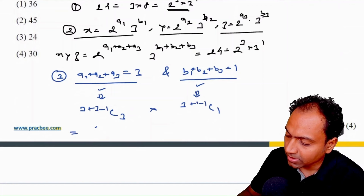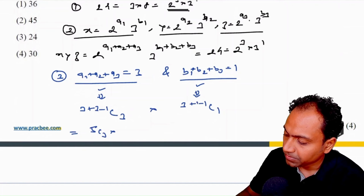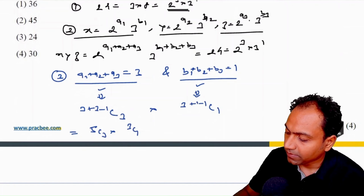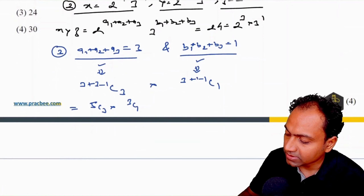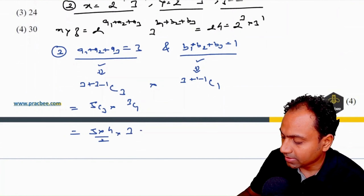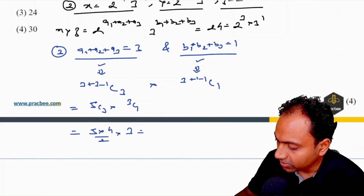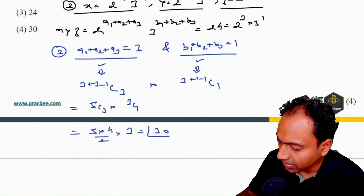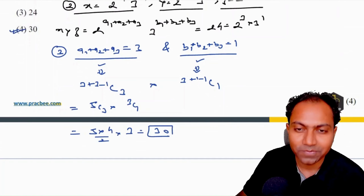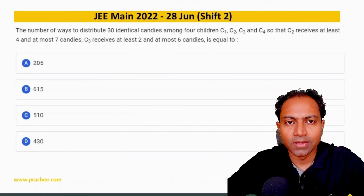5 C 3 simplifies to 5×4/2 = 10, and 3 C 1 = 3, so the answer is 10 × 3 = 30, which is option 4.